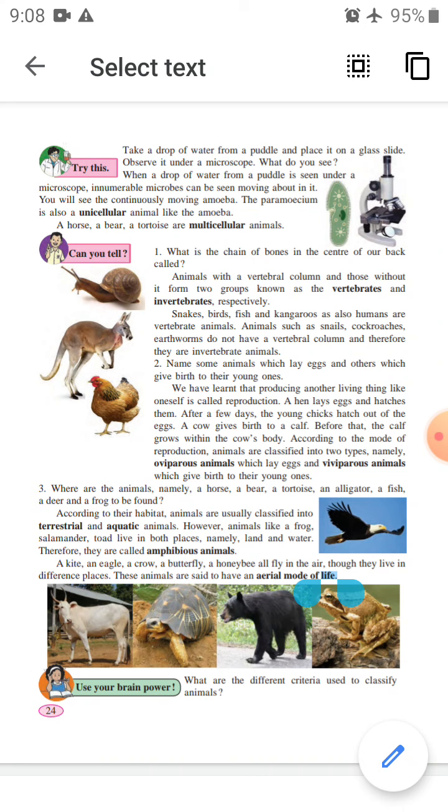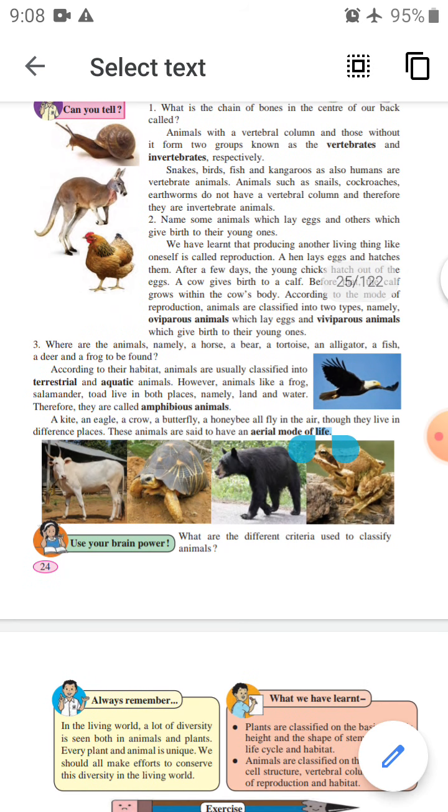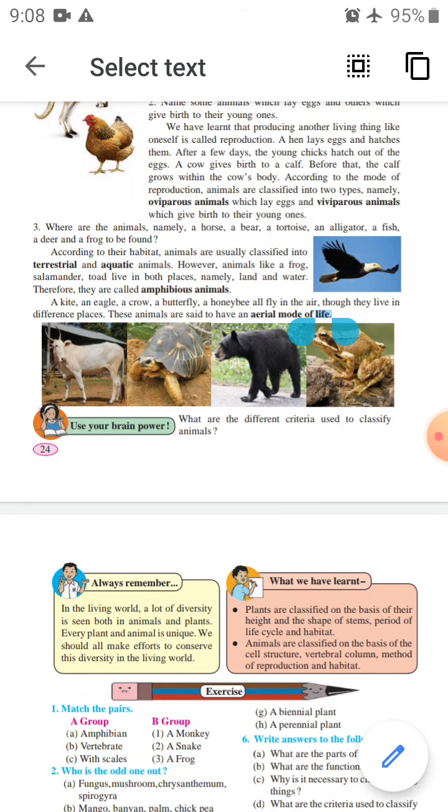A kite, an eagle, a crow, a butterfly, a honeybee all fly in the air though they live in different places. These animals are said to be aerial mode of life. See, there is one picture which also shows varieties of where they are living.